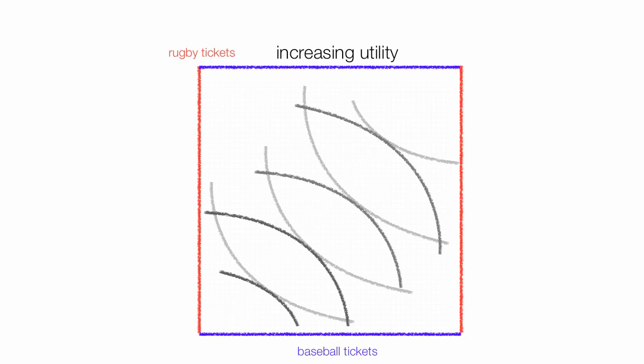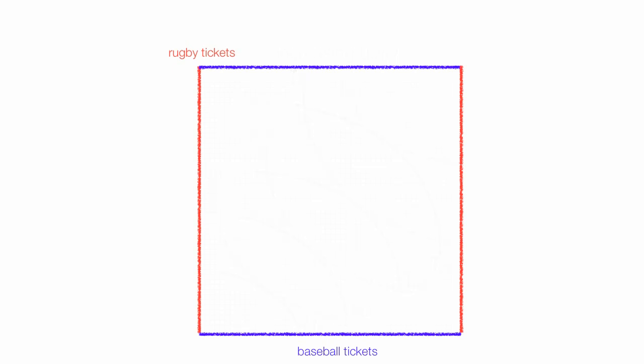Now I could label all the indifference curves like ID1, ID2, ID3 for David and J for Joe, something like that. But I don't want to do that right now because it gets a little messy and it's not necessary.